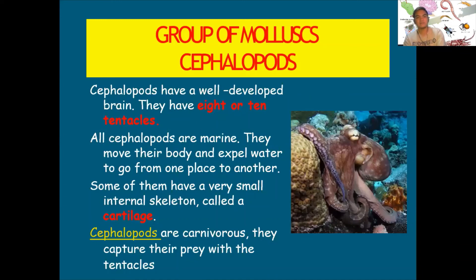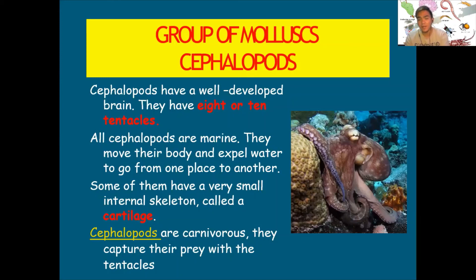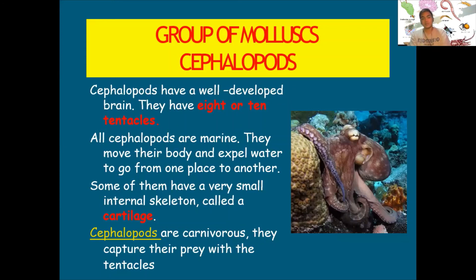Cephalopods have a well-developed brain and eight or ten tentacles. All cephalopods are marine. They move by expelling water to go from one place to another. Some have a very small internal skeleton called cartilage. Cephalopods are carnivorous and capture their prey with their tentacles.